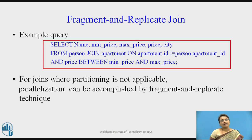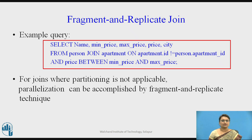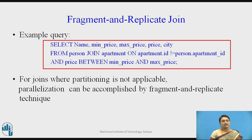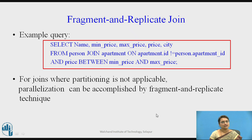Let us see how this will be executed using Fragment and Replicate Join. For joins where partitioning is not applicable — sometimes for every join operation, partitioning may not be applicable — but we still want to do the parallelization. In that case we use Fragment and Replicate Join. So it is used for two things: one is for non-equijoins, and another is where partitioning is not applicable.